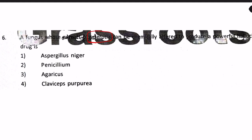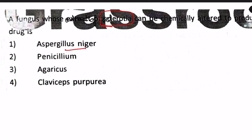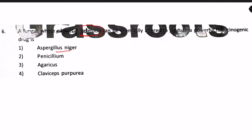The keyword 'sclerotia' is mentioned in the question. Sclerotia is related to and caused by the genus Claviceps, so the answer is Claviceps purpurea. We can rule out other options: Aspergillus niger is responsible for aflatoxin, Penicillium produces antibiotics, and Agaricus is a mushroom not related to sclerotia or hallucinogenic drugs. The answer is Claviceps.